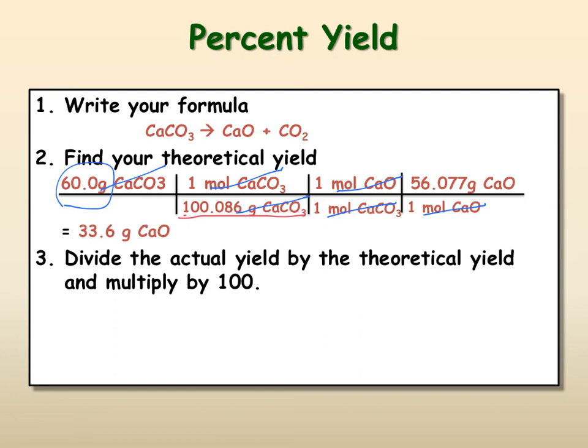And then finally, you divide your actual yield by the theoretical yield and multiply by 100. Looks like 15.0 divided by 33.6, so it gives you a 44.6% yield. So please do the online quiz, and we will work with this more in class.